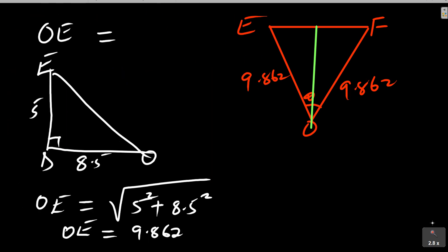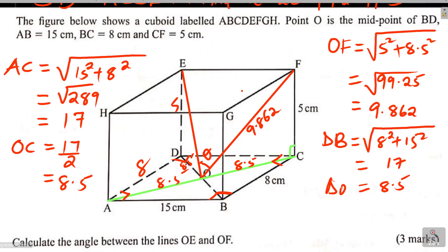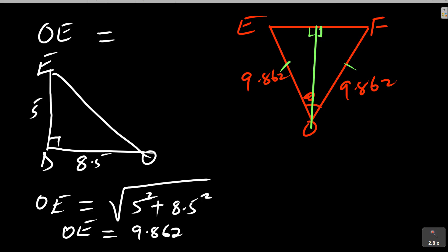You notice that triangle EOF is an isosceles triangle. Drawing a perpendicular line from O to meet EF at 90 degrees — since EF is 15, this splits into 7.5 and 7.5. This isosceles triangle means we just need to get the half-angle and then multiply by 2. Let this half-angle be theta.